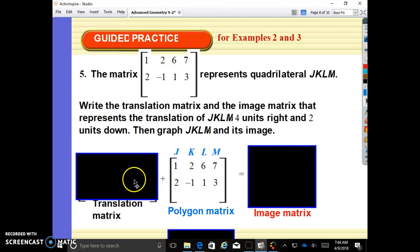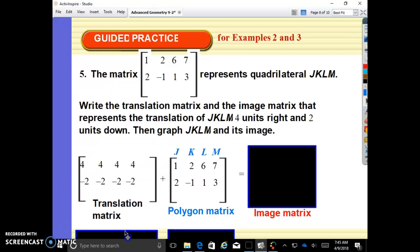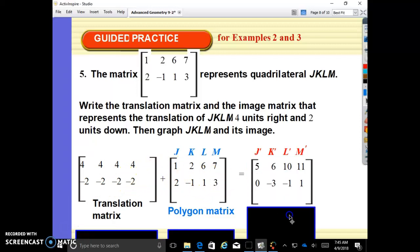Right four, in the positive direction four, left and right, right four, and then down two. So when you apply these, four plus one is five. Four plus two is six. Four plus six is ten. Four plus seven is eleven. Negative two plus two is zero. Negative two plus negative one is negative three. Negative two plus one is negative one. Negative two plus three is one. And this is your image.